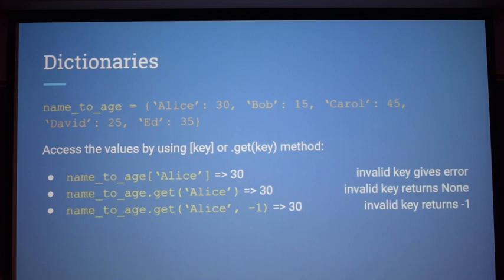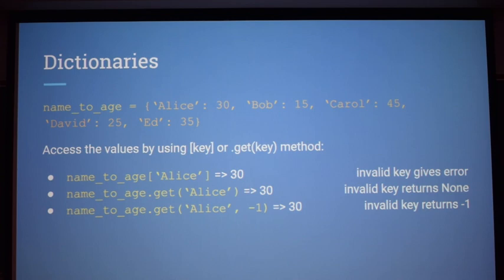For get, you can optionally provide a second parameter. For example, if you do get('Alice', -1) and Alice is not found in the dictionary — an invalid key — it would return -1, whatever you entered as the second parameter. This is just an extra feature; it's not used very often, but good to know.